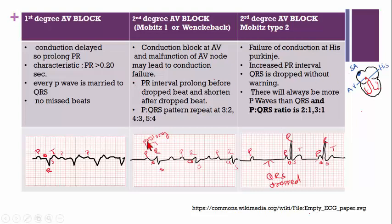The PR interval prolongs before the dropped QRS, and it is shortened after the dropped beat. The P-to-QRS pattern may repeat at a 3:2, 4:3, or 5:4 ratio.